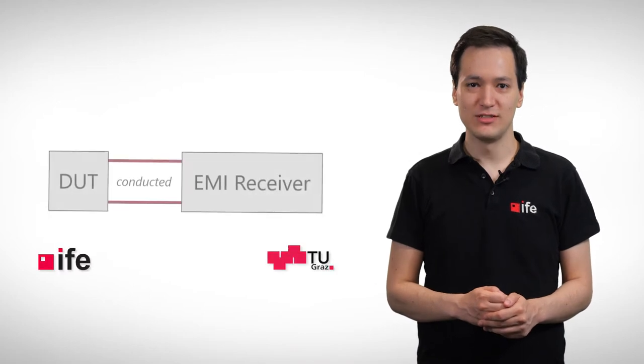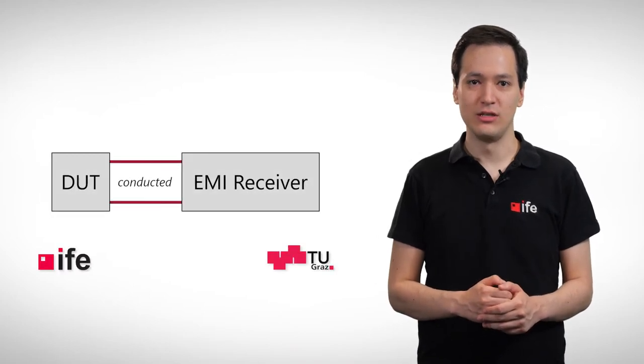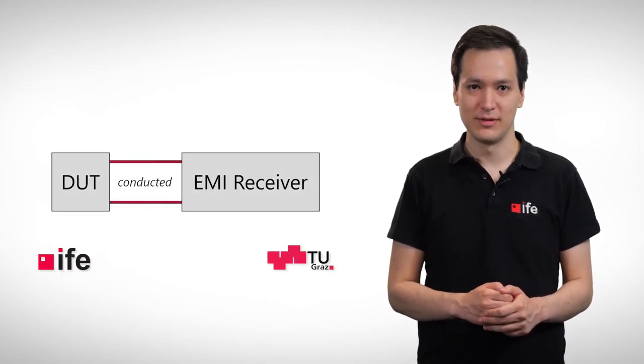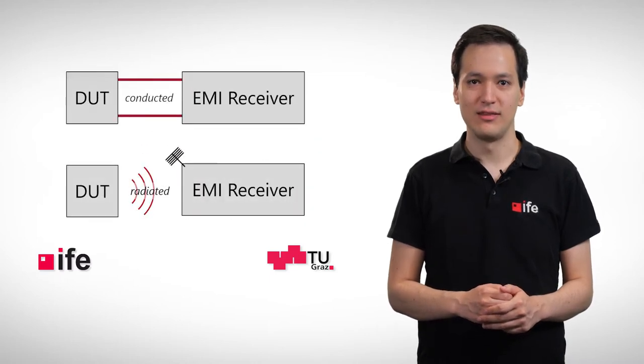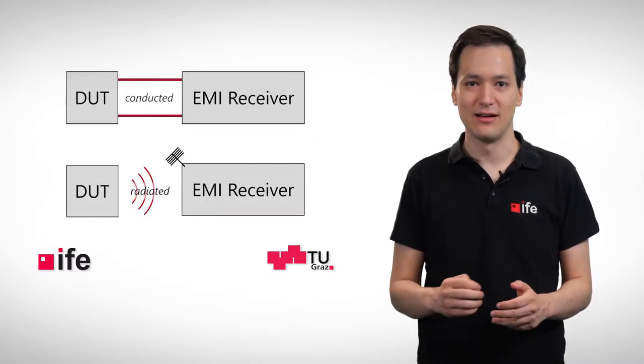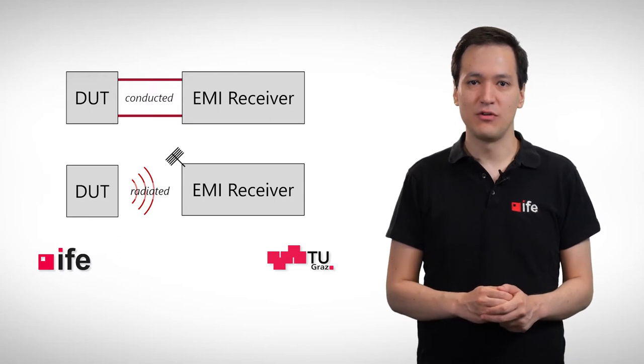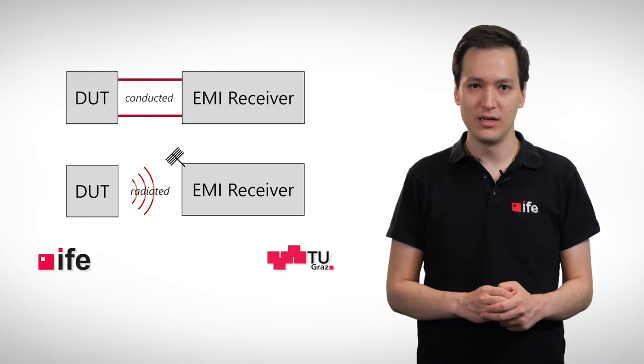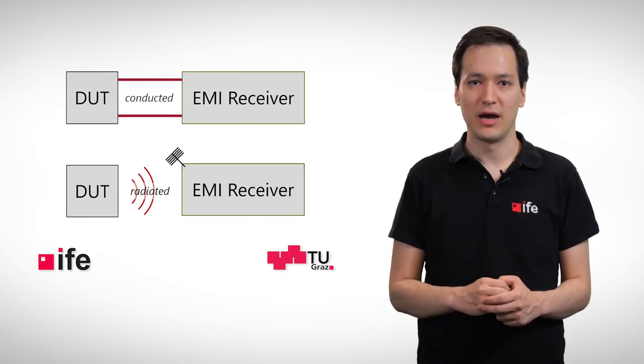Basically, we can differ between two categories. First, conducted emissions, where we directly connect our DUT to the EMI receiver. And second, radiated emissions, where the EMI receiver acts like an antenna. I will discuss some of the most important measurement setups in other videos. But today, we focus on the EMI receiver itself.